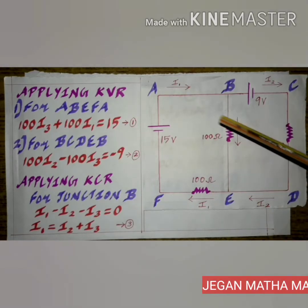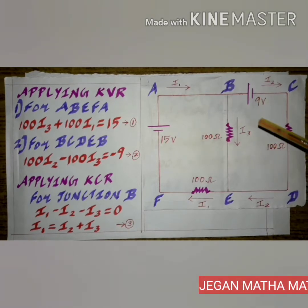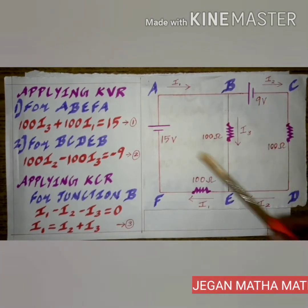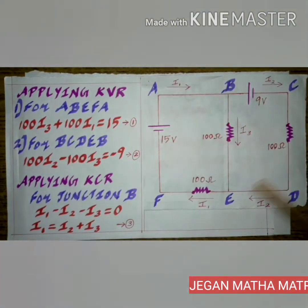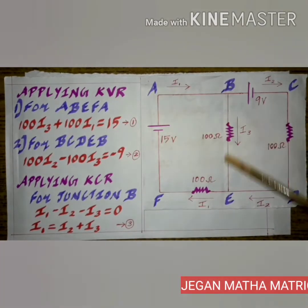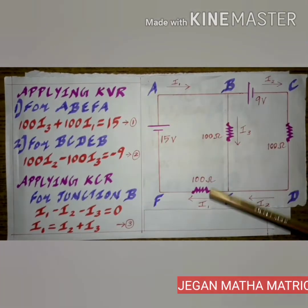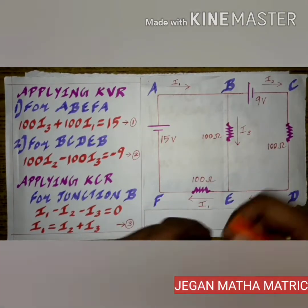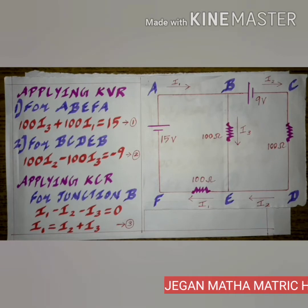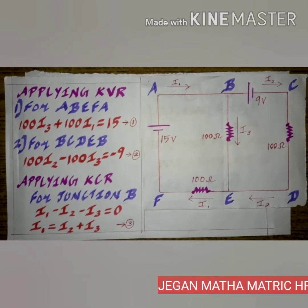We have to find the values of the three currents using Kirchhoff's rules. First, I am going to apply Kirchhoff's Voltage Rule for the loop A, B, E, F, A. Kirchhoff's Voltage Rule states that the algebraic sum of the product of the current and the resistance in a closed loop is equal to the sum of the EMF in that closed loop.